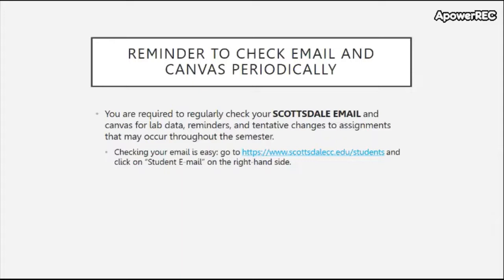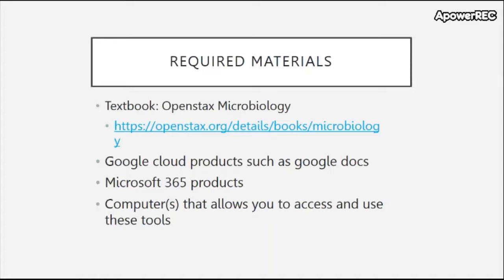You are required to check your Scottsdale email regularly for updates, lab data, reminders, changes to the schedule, and any announcements. We won't use off-course emails for these messages. If you don't know how to check your email, just go to www.scottsdalecc.edu/students and click on the student email on the right side.